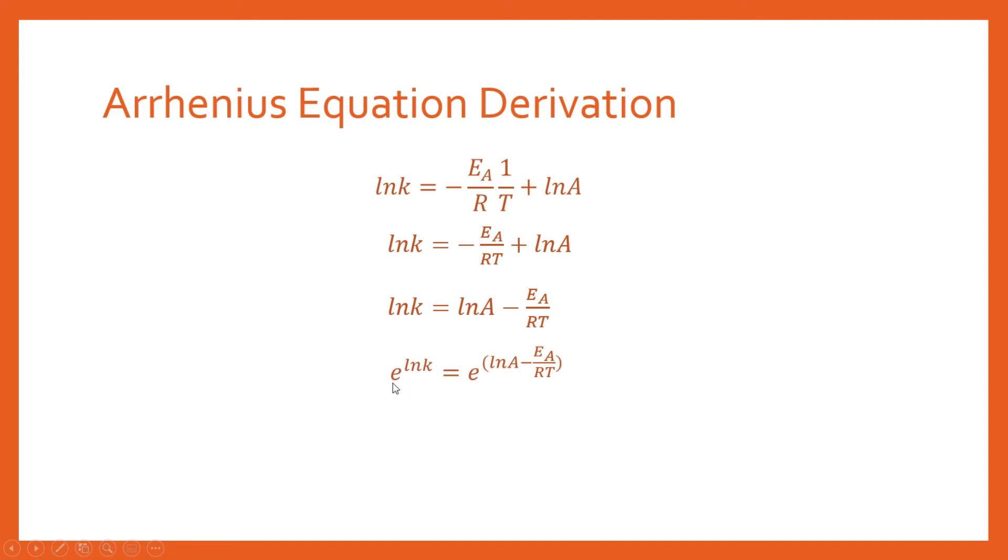Then we can take e of both sides. You should know that e to the ln cancels out, so you'll be left with K there. I'm splitting this up using another property. When we've got e to the power of something minus something, that's the same as multiplying e to the power of this times e to the power of the other part.